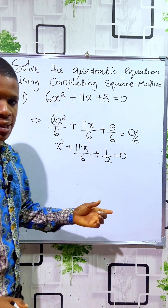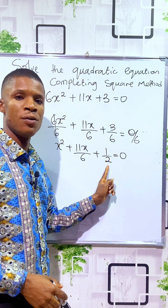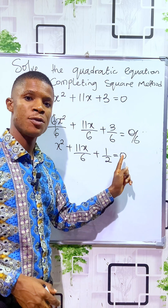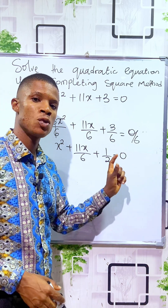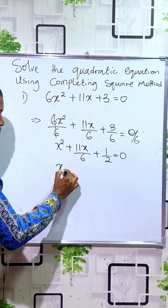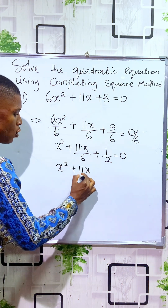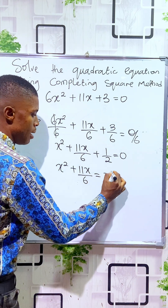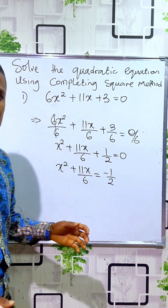The next stage is to move the constant to the other side. The constant here is 1/2. It crosses the equality sign to become negative, or you subtract 1/2 from both sides. So you have x² plus 11x/6 equals minus 1/2.